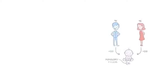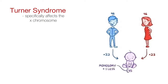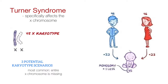This monosomy is what happens in Turner's Syndrome — it specifically affects the X chromosome. There are three potential karyotype scenarios. Most commonly, an entire X chromosome is missing, giving a 45 karyotype, which means the person only has 45 chromosomes.